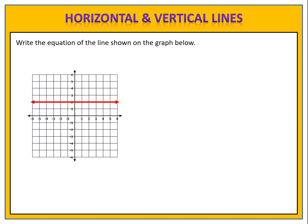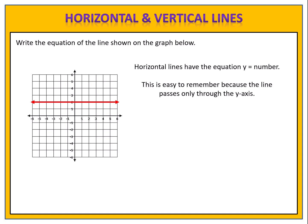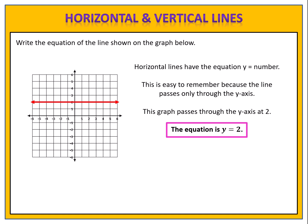Write the equation of the line shown on the graph below. We see that we have a horizontal line, and we know that horizontal lines have the equation y equals a number. This is easy to remember because the line passes only through the y-axis. We see that the graph passes through the y-axis at 2, so the equation is y equals 2.